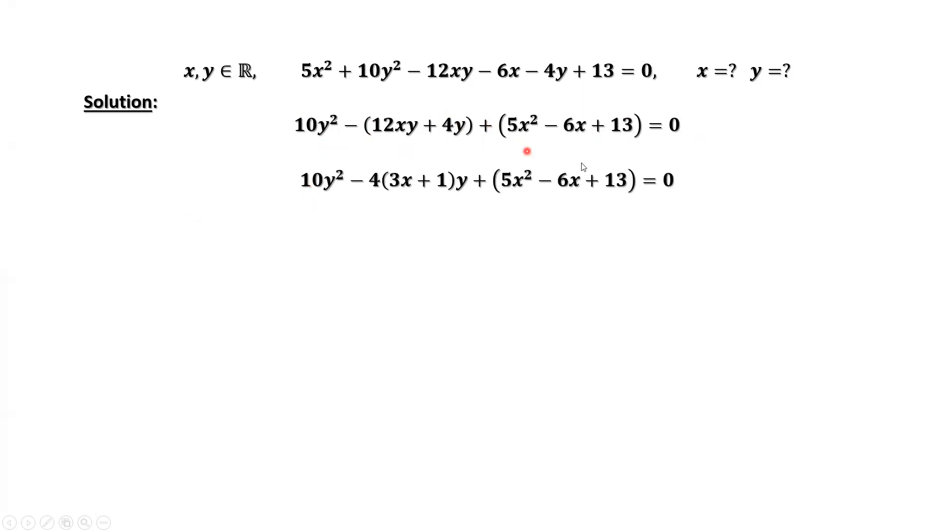So here, if we consider this as a quadratic equation of y, we have a = 10, b = -4(3x + 1). The last part, that's c, the last part that's a constant.